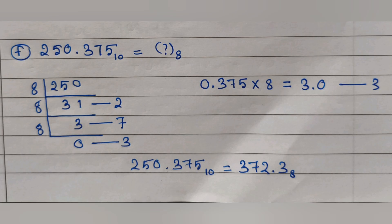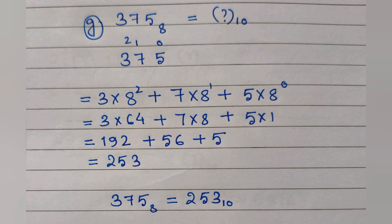For question F, we have to convert a fractional decimal number into octal. First we divide the left hand side digits — 250 — by 8, and we get 372. Then for the fractional part 0.375, we multiply by 8 and get 3.0. We continue multiplication until the decimal becomes 0 — here we get 0 at the first step itself, so the decimal portion is 3. The final answer is 372.3 with base 8.